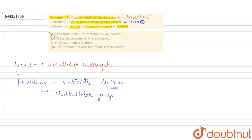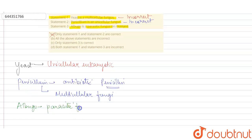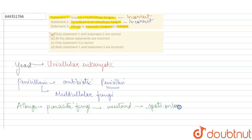The last statement states that Albugo is a parasitic fungus on mustard. Albugo is indeed an important parasitic fungus — this is absolutely true. It grows on mustard, causes a disease, and leads to spots on the leaves. So statement 3 is an absolutely correct statement.